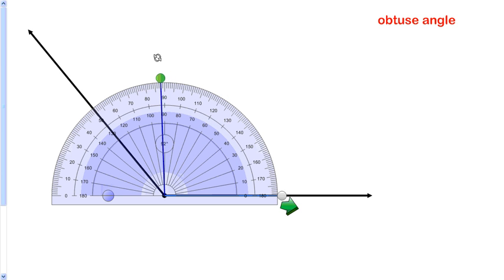Is it 10 degrees? No. 20, no. 30, no. 40, 50, 60, 70, 80, 90, no. Keep going. 100, 110, 120, 130. This is 130 degrees, this angle. That is how you measure an obtuse angle.